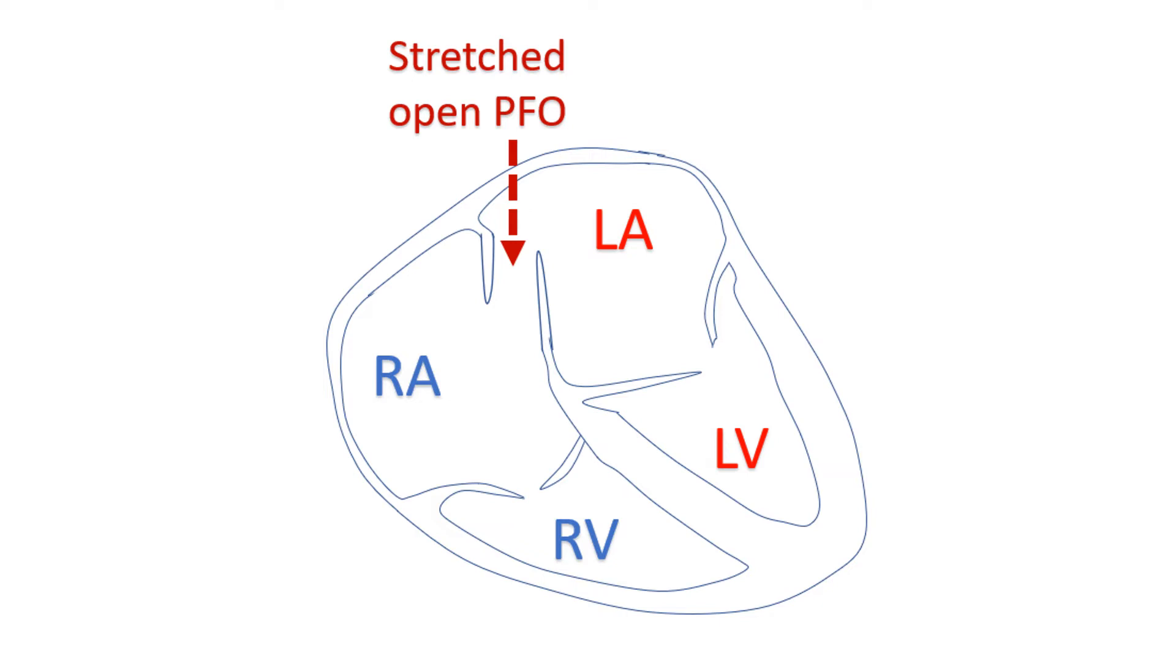If too much right atrial blood with lower oxygen saturation reaches the left atrium, systemic arterial oxygen saturation falls, causing cyanosis.